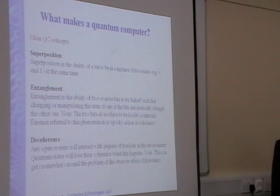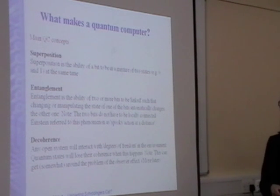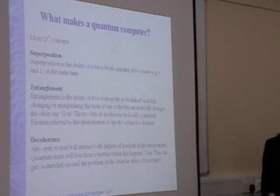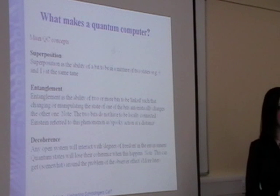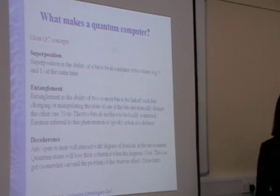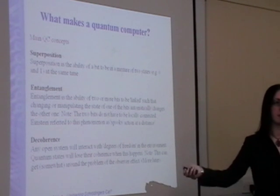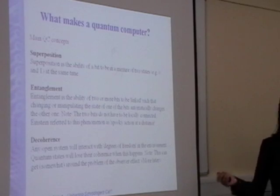The second important concept is entanglement. This is the ability of bits to talk to each other across large separations instantaneously. This is what Einstein referred to as spooky action at a distance. What happens is, when two quantum systems talk to one another, and then you separate them by a physical distance, they're still linked, no matter how far away they are.